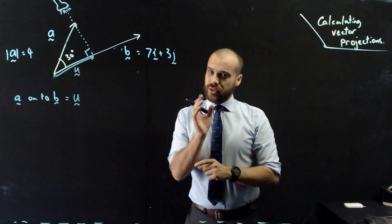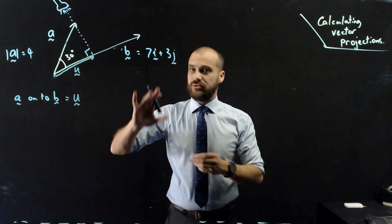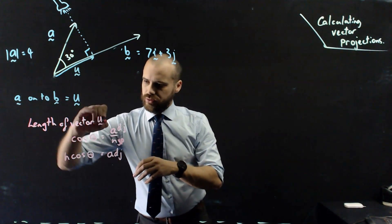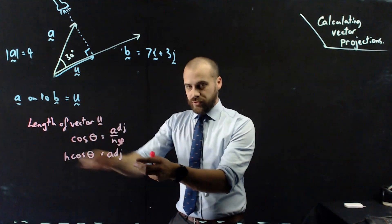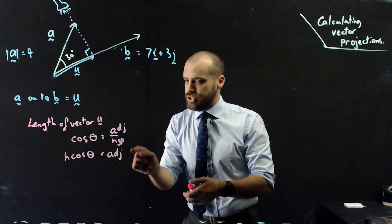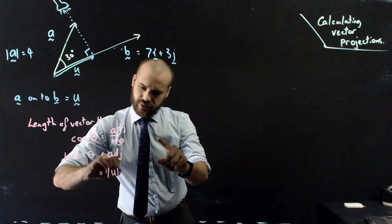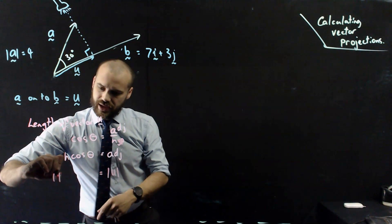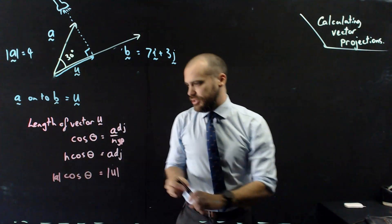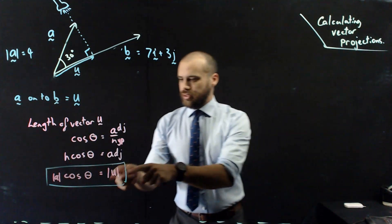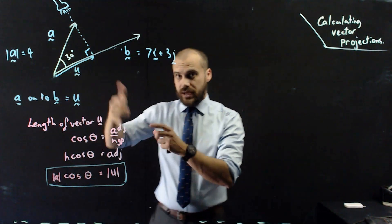How are we going to find vector U? It would be nice if we knew the length of vector U. The length is straightforward because it's just basic trigonometry. cos θ = adjacent/hypotenuse, which rearranges to hypotenuse × cos θ = adjacent. In this question, the adjacent is the magnitude of U, the hypotenuse is the magnitude of A, and cos θ is the angle between them.